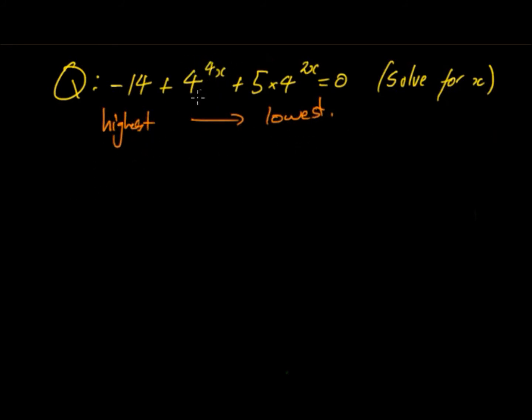So what's the highest power? That's going to be 4x. So 4^(4x) + 5·4^(2x) - 14 = 0. Then we can see that there are two terms here. We have the 4^(4x) and 4^(2x).